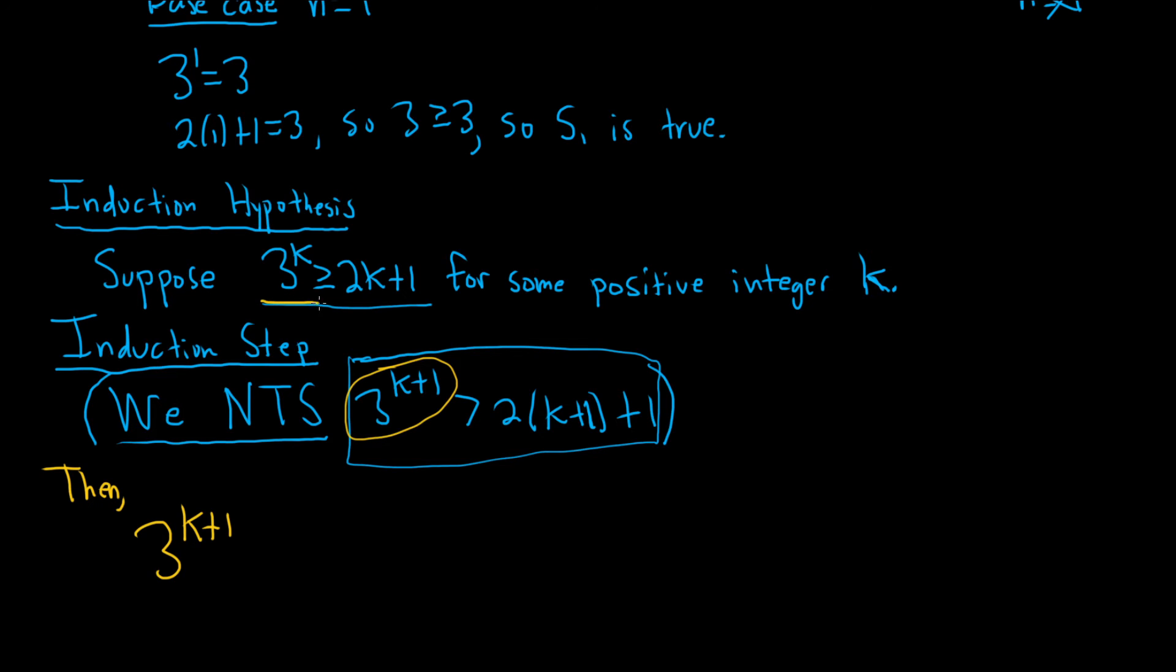The key is you have to use your induction hypothesis somehow. So we have to somehow involve 3 to the k. But here we have 3 to the k plus 1. So the trick is you can write it like this. This is 3 to the k times 3 to the 1. And the reason you can do that is because when you multiply these, the bases are the same. So you end up adding the exponents.